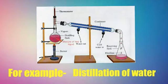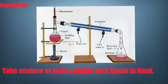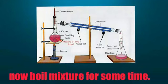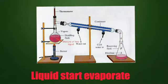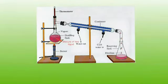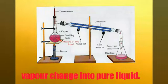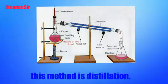Let's start the experiment. We take a mixture of soluble solid and liquid in a flask. Now boil the mixture for some time. Liquid starts to evaporate. By using condensation method, vapor changes into pure liquid. This method is distillation.